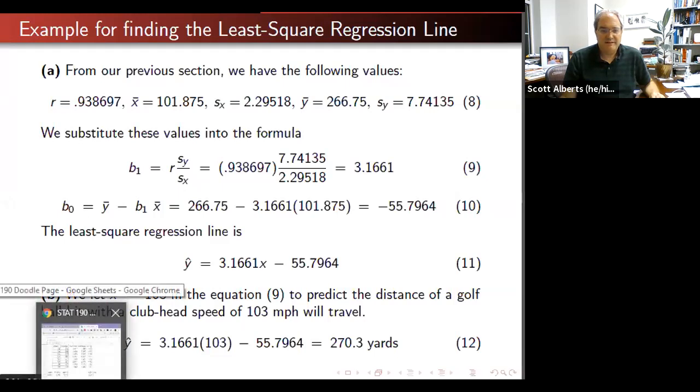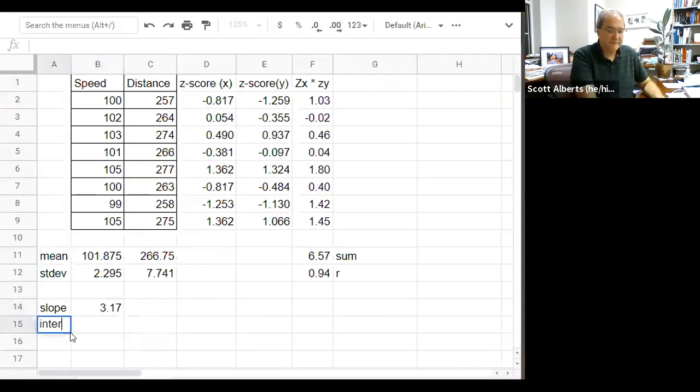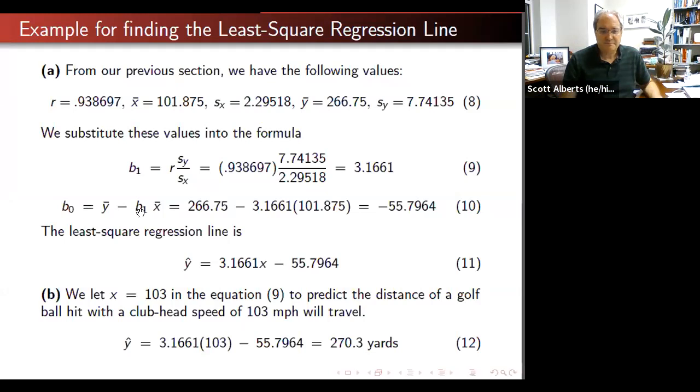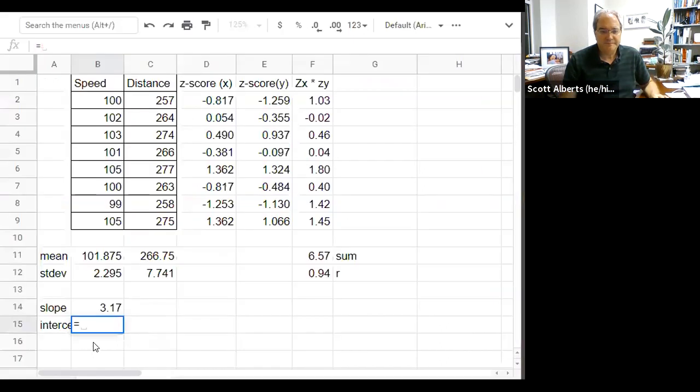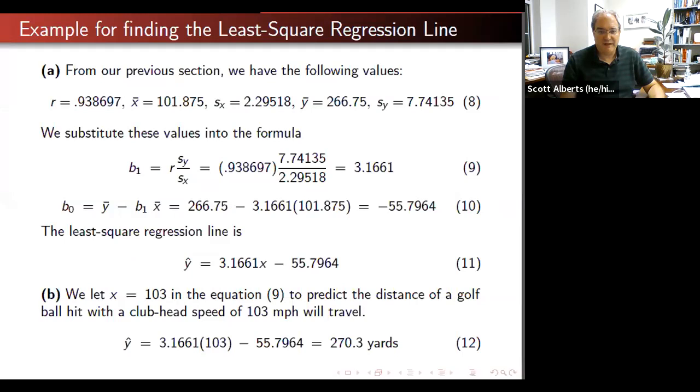Then we're going to calculate our intercept. And remember, the intercept is where it would be for zero. And of course that's kind of a weird thing here because zero is really far away from our speeds. And again, we're going to look and remember our formula: y bar minus the slope times x bar. So again, annoying to do but not hard. We get minus 55.8.